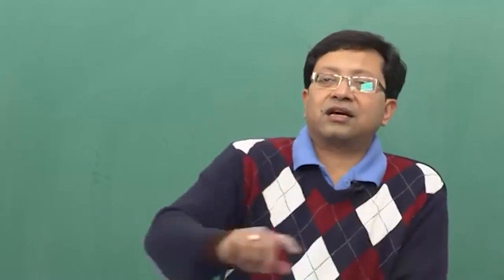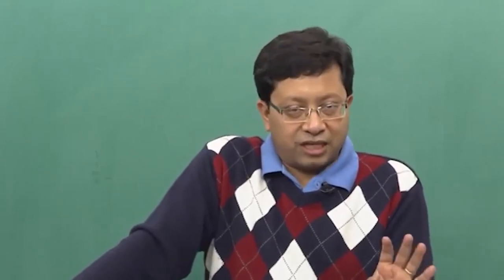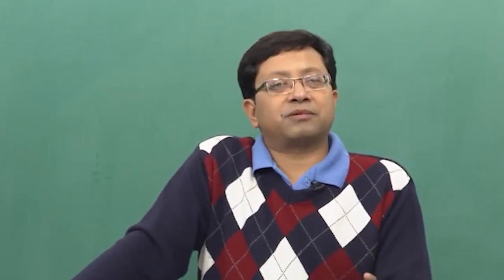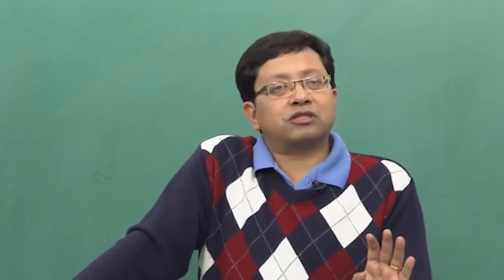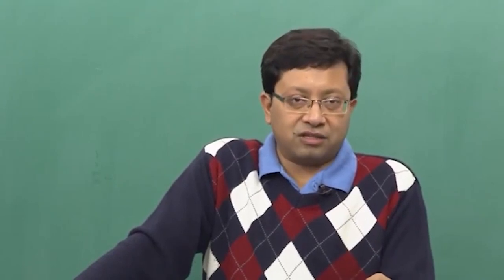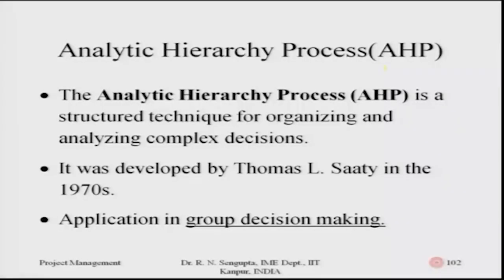As mentioned in the last class, we will now start doing problems. First I will discuss a very simple AHP problem to give the solution technique, then a decision tree problem, then come to the concept of decision tree problems and utility theory, and later the concept of financial metrics — IRR, rate of return, average rate of return — in order to make a decision for a project.